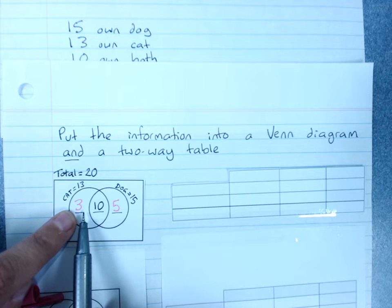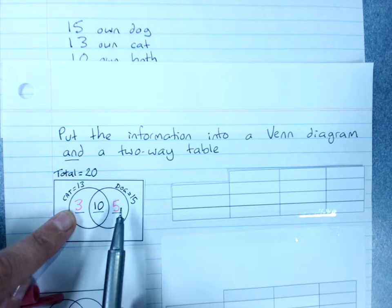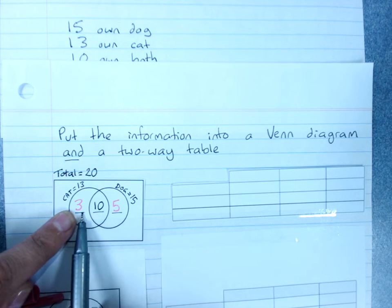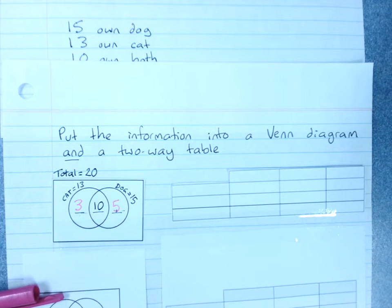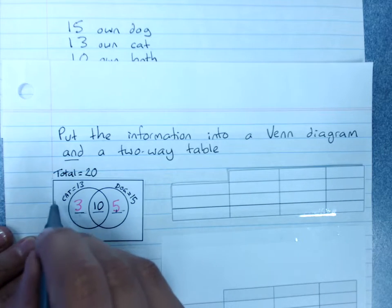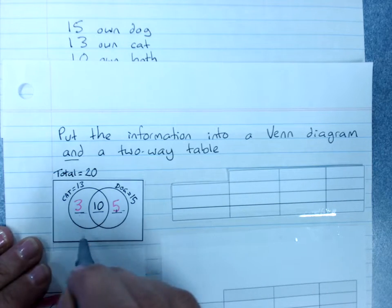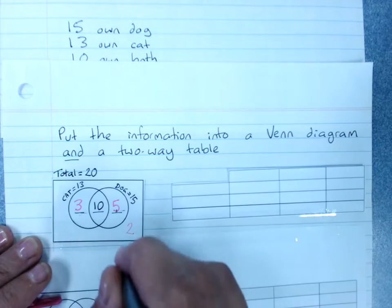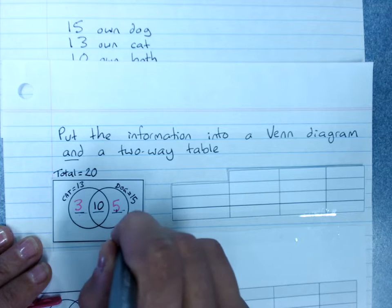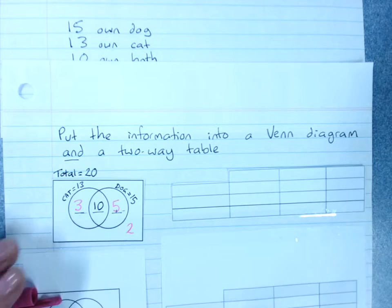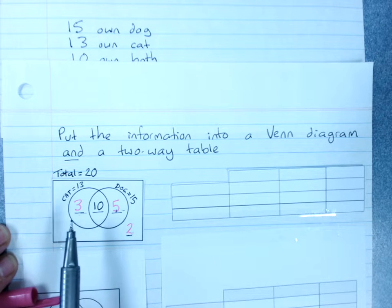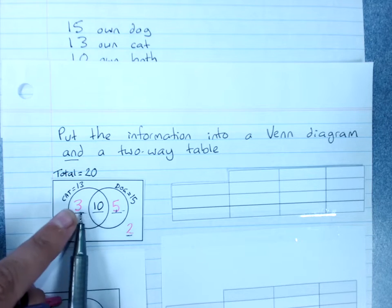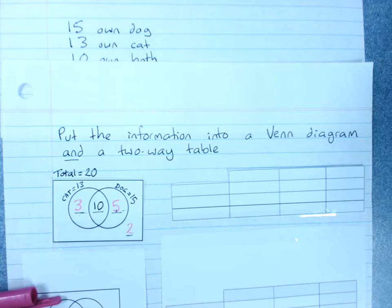So when you're counting the total number of people, you're only counting these numbers. Don't count these. That's three for a cat only, ten for both, and five for a dog only. In total, that's eighteen people. Where are the other two? They don't own a pet at all. And where we put them is inside the rectangle, but not in the circles. So those two people are there, and they join in to add up to the total of twenty. So there's four numbers that really matter in a Venn diagram. The four zones of a Venn diagram. So that's a Venn diagram. That's how we make them.